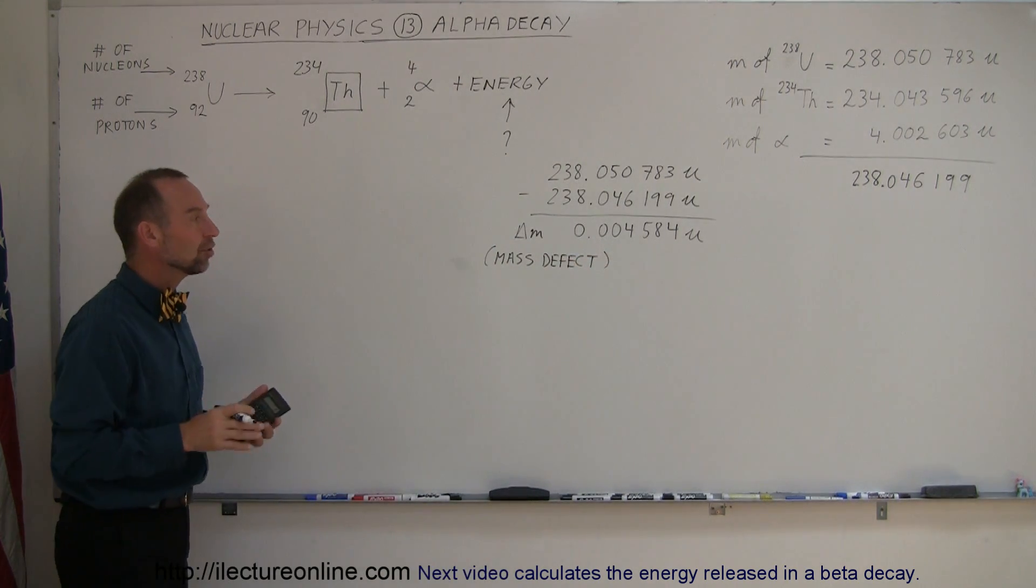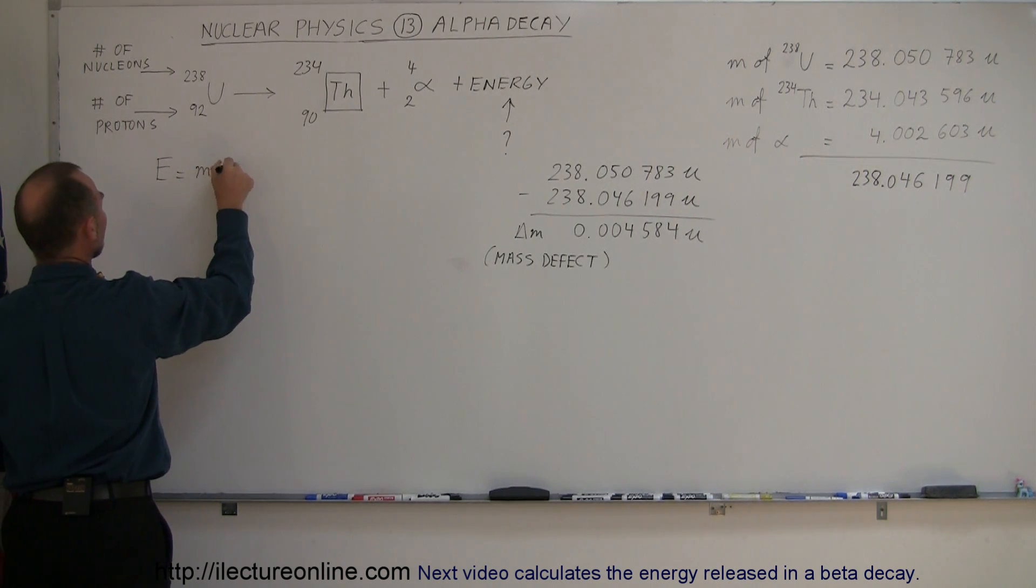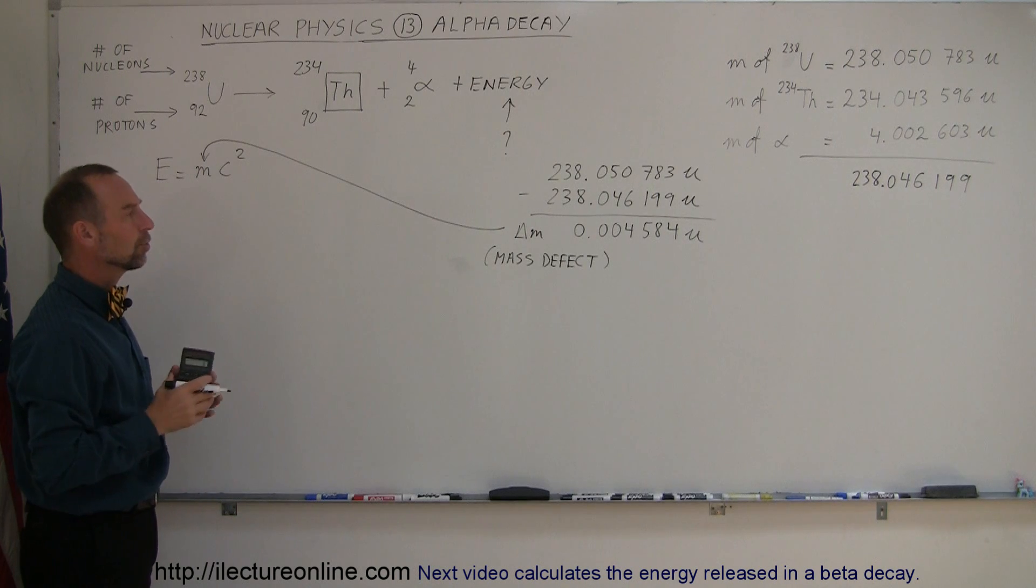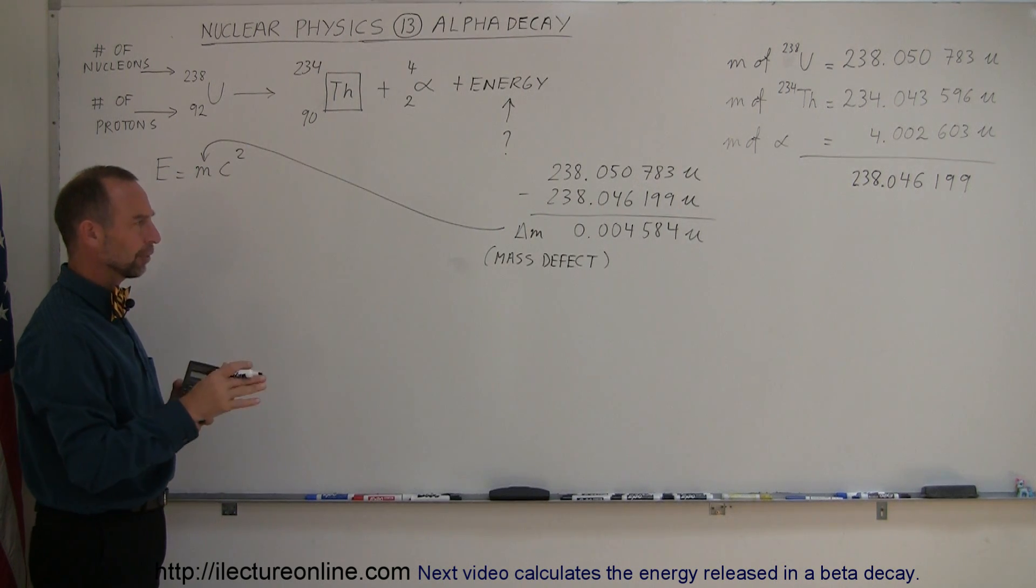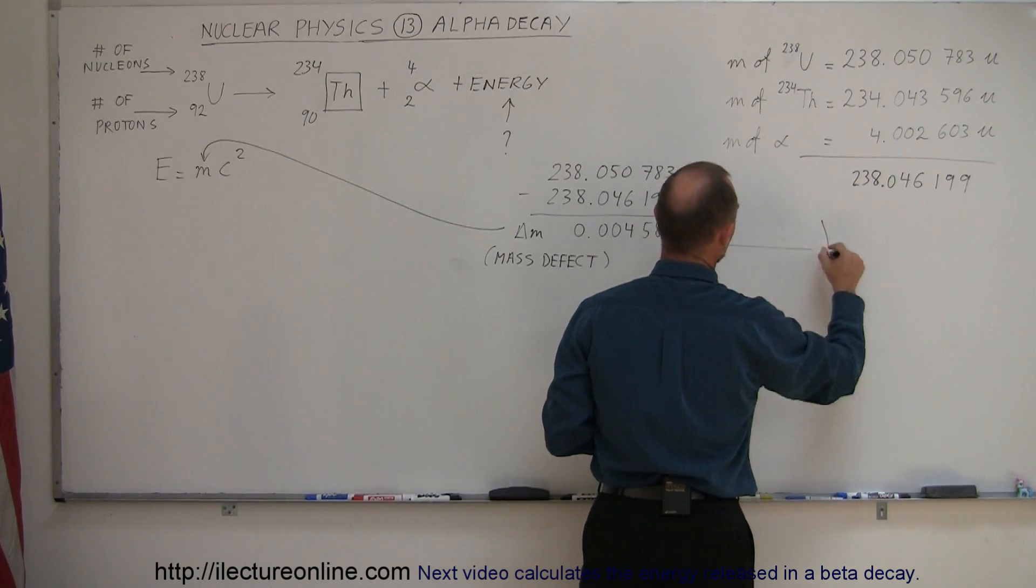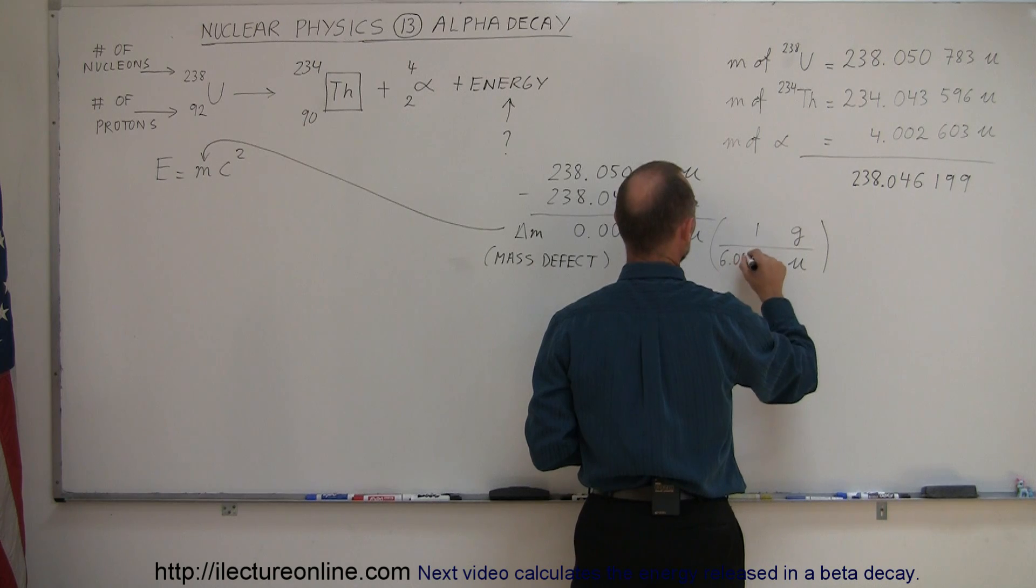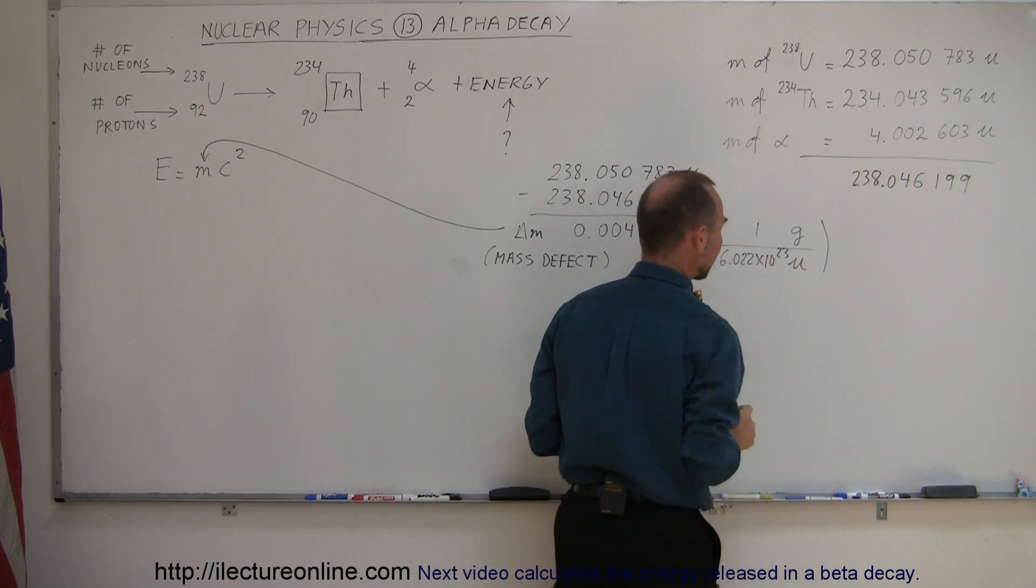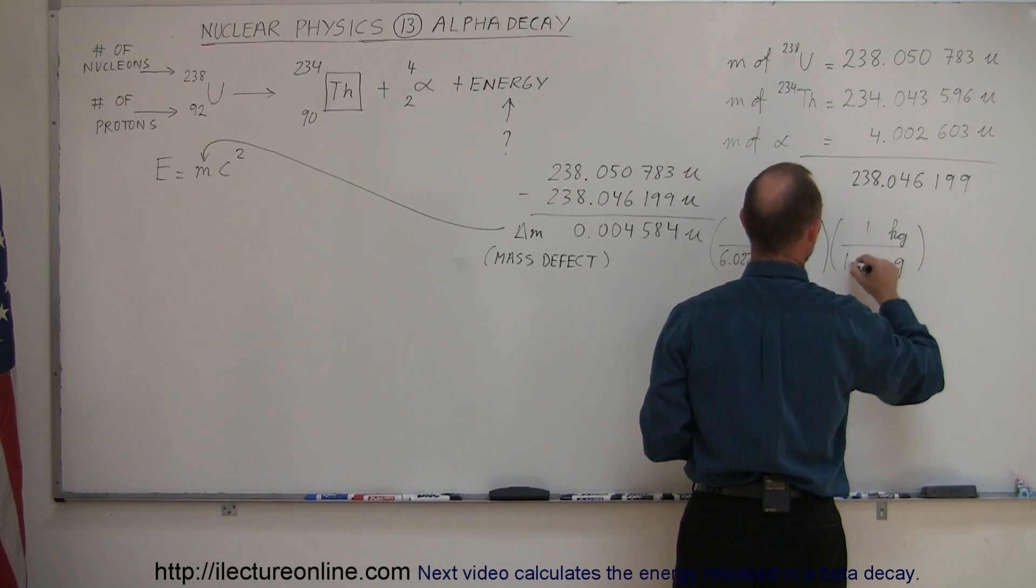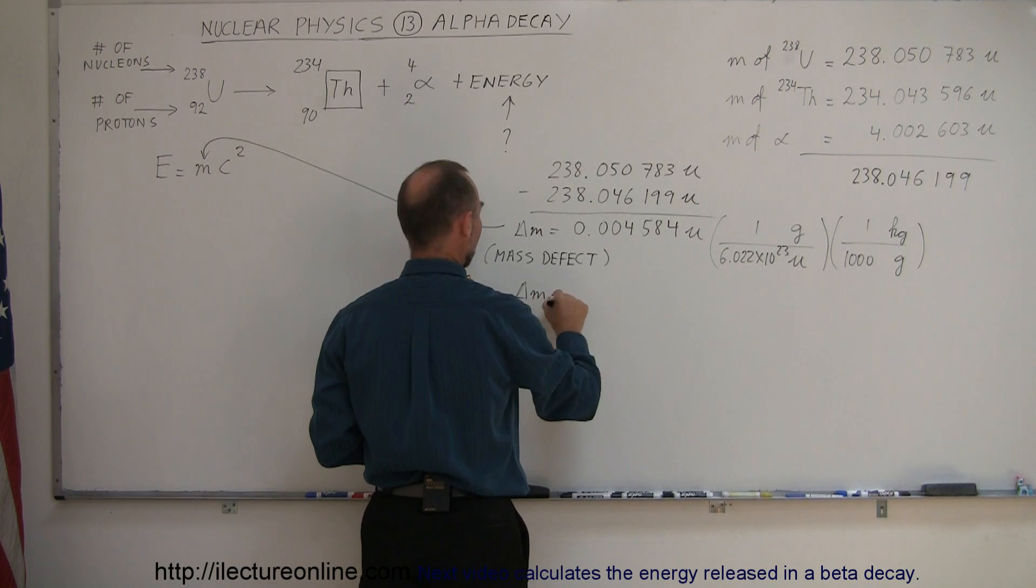All right, so how do we find the energy then? Well, we can do it in two ways. First of all, we can think of it in terms of E equals MC squared, and so what we have to do then is plug this M in here and calculate the energy released. So let's do that first. Of course, before we can plug that in, we have to convert that to kilograms. And the conversion to kilograms, first of all, that would be conversion to grams in atomic mass units, and one gram is 6.022 times 10 to the 23 atomic mass units, and then converting that to kilograms, one kilogram is 1,000 grams. So if we're going to convert this into kilograms, let's go ahead and do that.